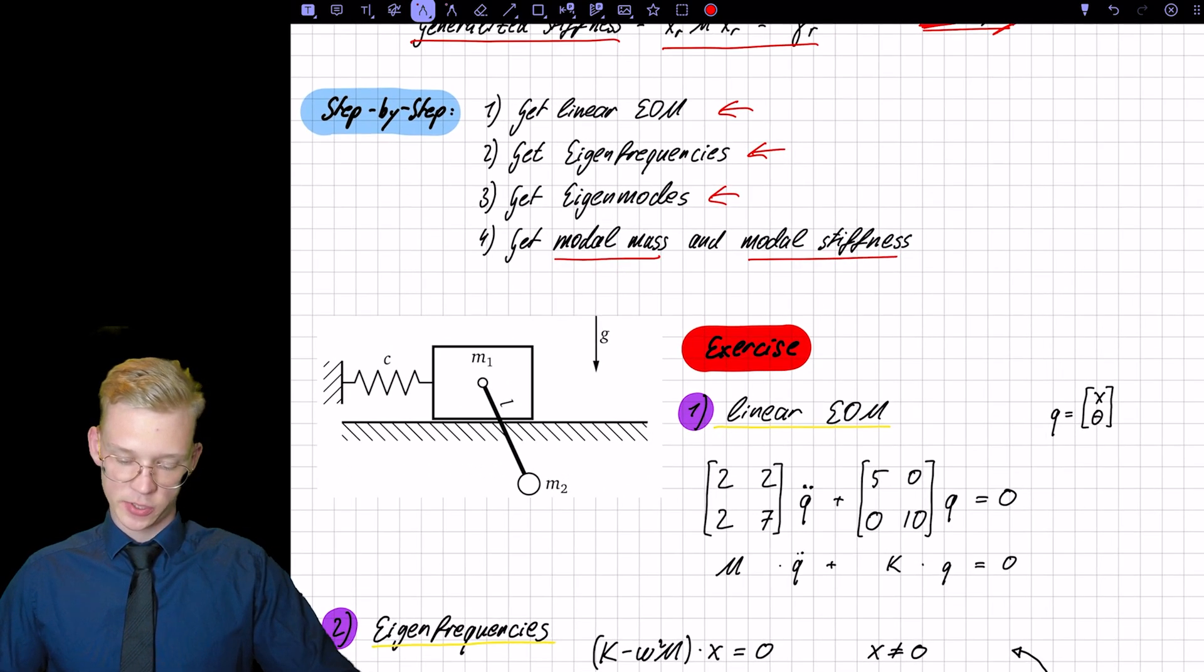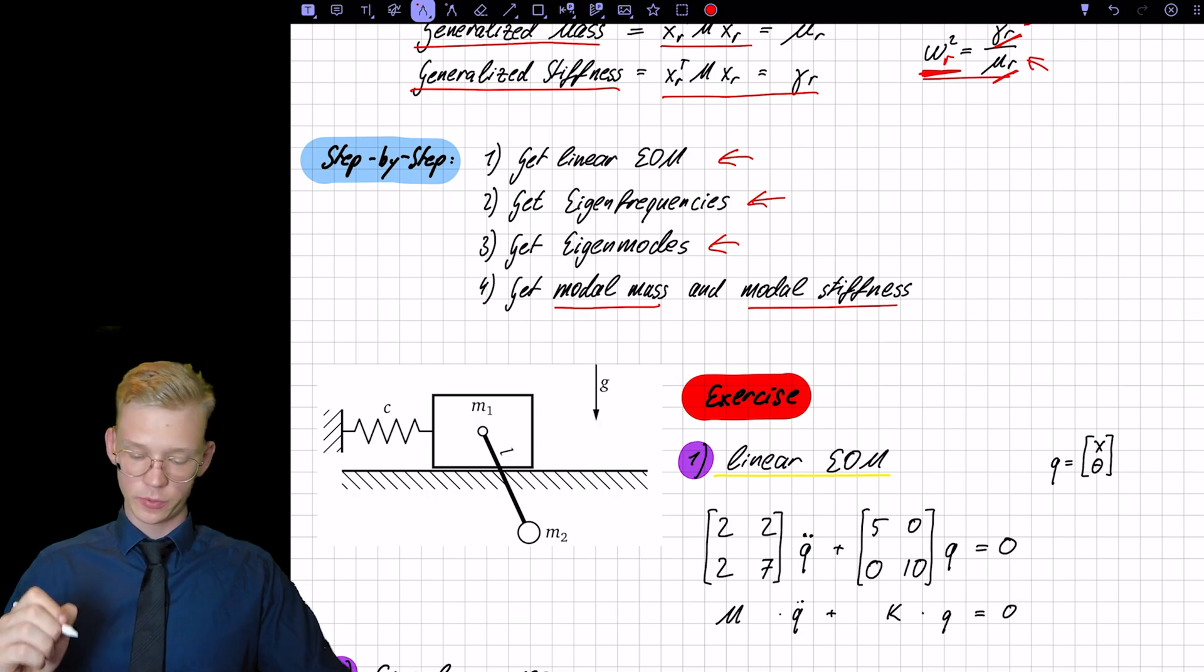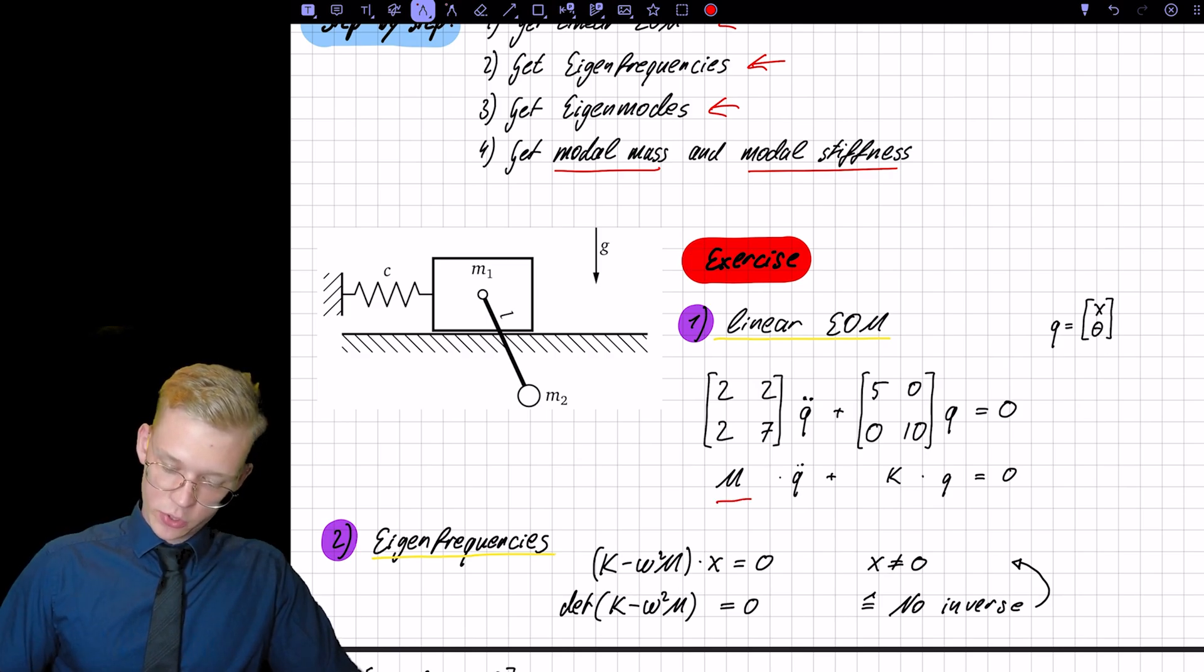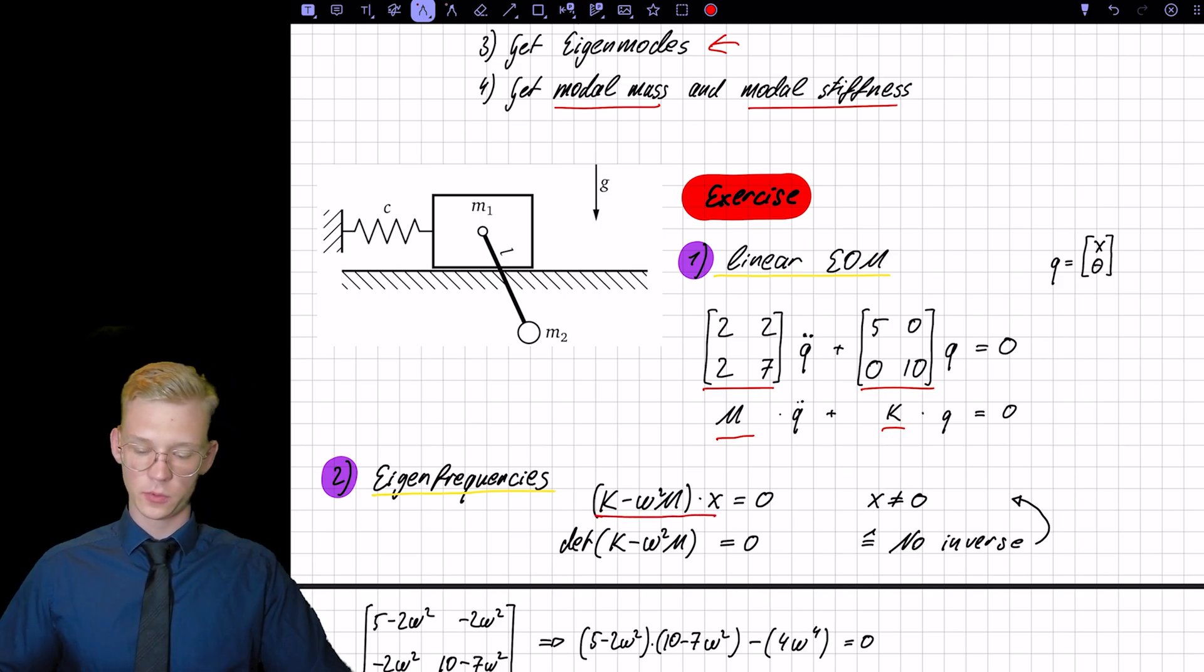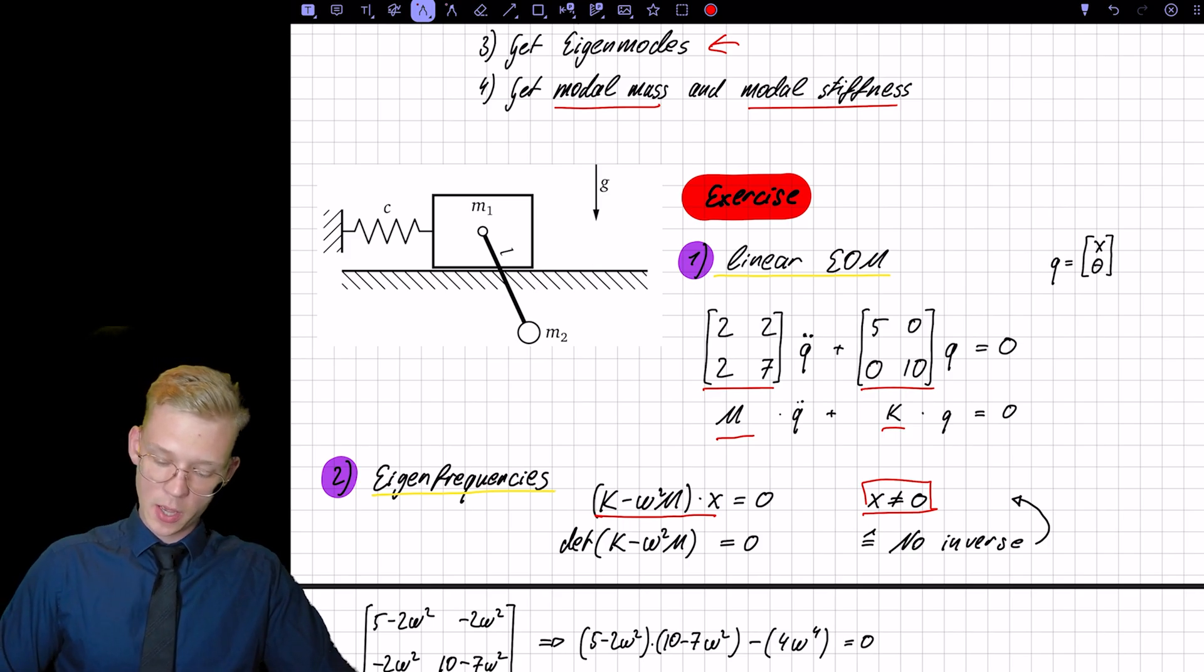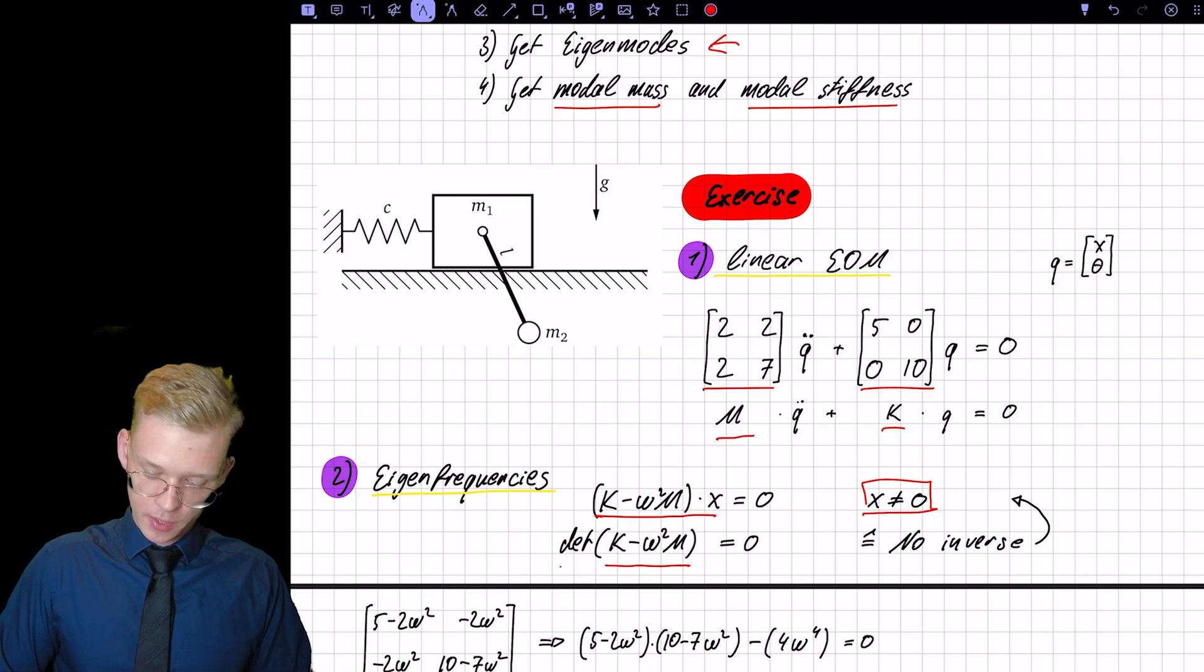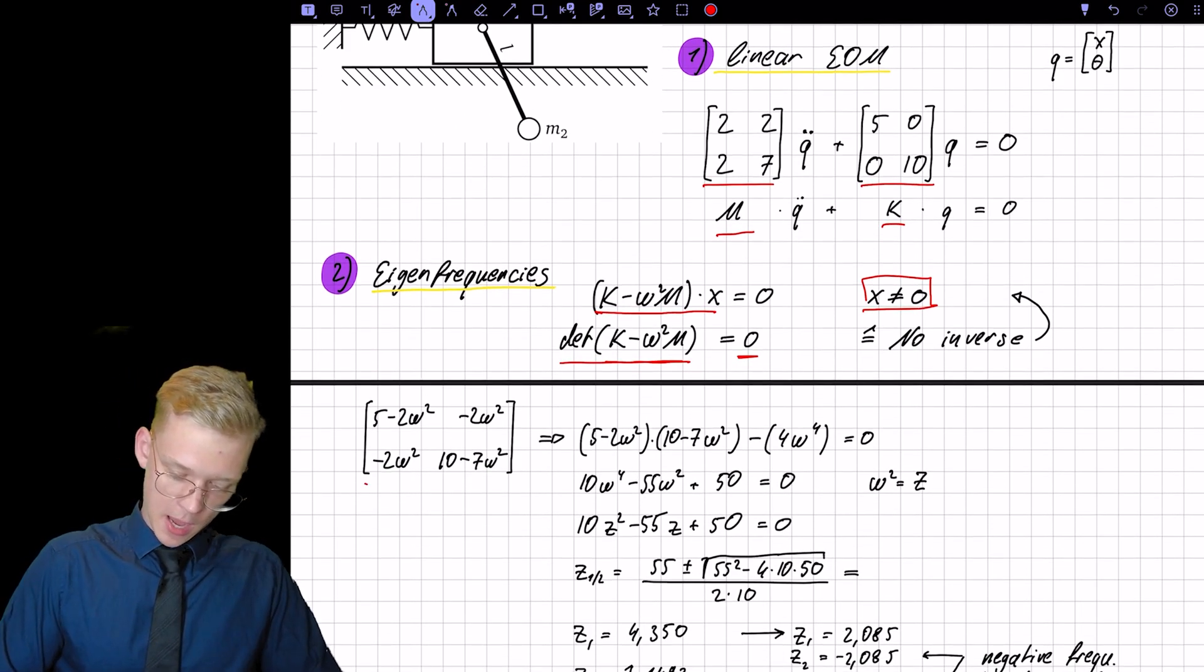So let's look at the exercise that we also talked about in the last videos. If you didn't see that video, check this video out, so you will understand what's going on. So we have a linear set of equations of motion. We have the m matrix and the k matrix. And now we have to find the eigenfrequencies. So we have this formula to get the eigenfrequencies. We do not accept the trivial solution of x equals zero. So we need to find a matrix that has no inverse. So it's singular. So the determinant is zero. So this is basically an eigenvalue problem.